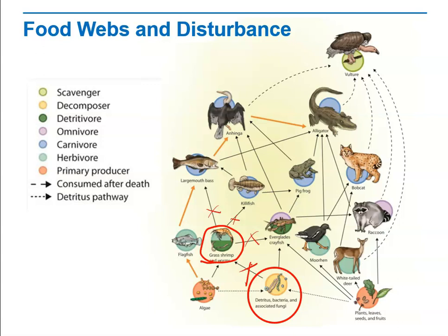We see that killifish and crayfish would also decline because of food, and then that might affect the organisms higher up, or they may have to shift to different food sources, or they may have to emigrate to another environment.